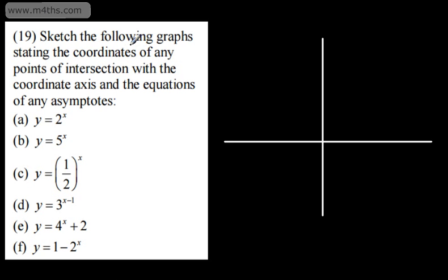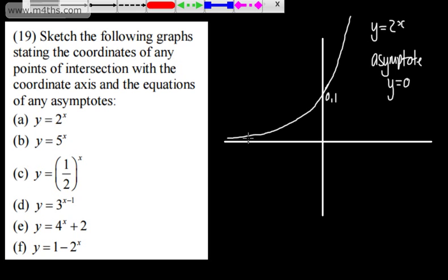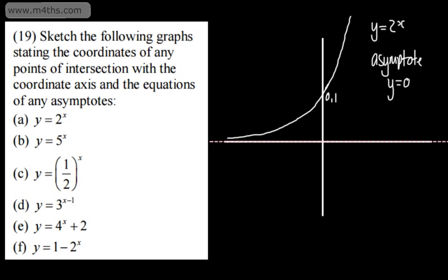In question 19, we're asked to sketch the following graphs, stating the coordinates of any points of intersection with the coordinate axes and the equations of any asymptotes. For y = 2^x, I'll draw that — it gets very big very quickly. I'll label the point (0, 1) and state that the asymptote is the line y = 0. No matter how large the negative value of x, y will never be 0 — it just tends to 0.